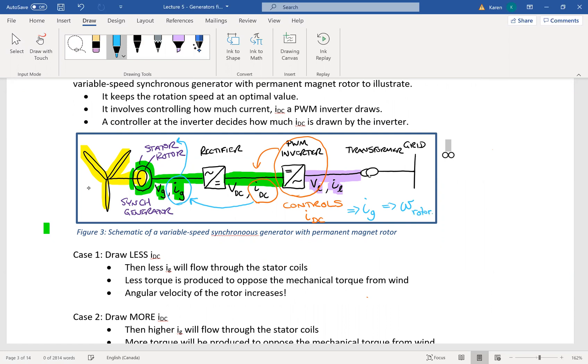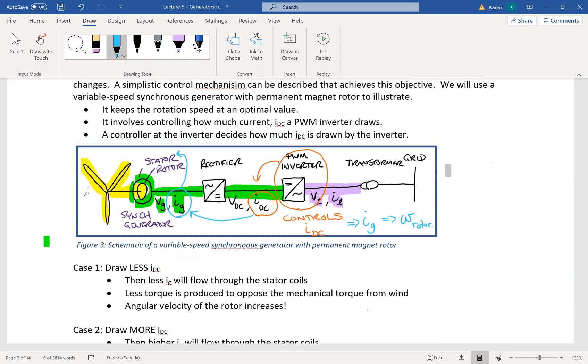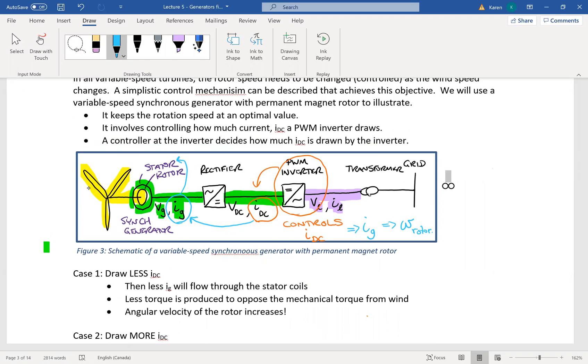So we want to control the speed of the rotor. So you're asking, well, how do I govern, how do I change the current of a stator to get the speed of the rotor to increase?